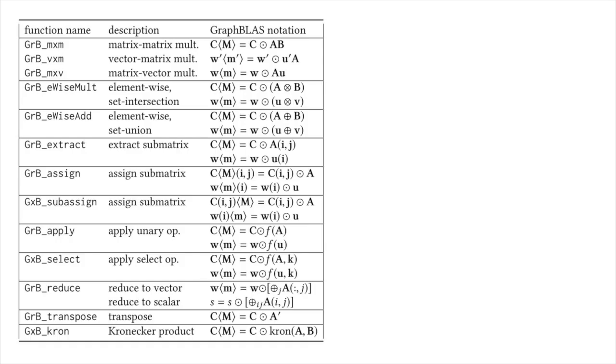The primary GraphBLAS operations include matrix multiply, element-wise operations, extract and assign, and so on. They can all be used with a mask and with many different data types, operators, and semi-rings.